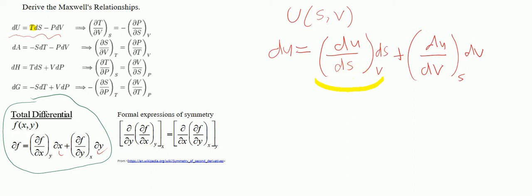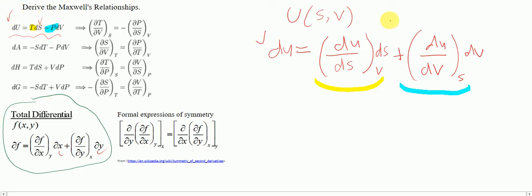Negative P corresponds to ∂u/∂V at constant S, because we have du, dS, and dV. So we can write that ∂u/∂S at constant V equals temperature, and ∂u/∂V at constant S equals negative P.